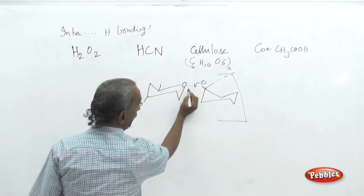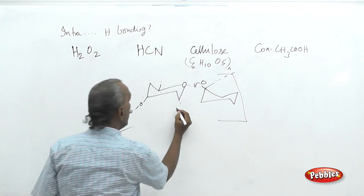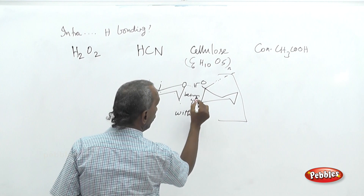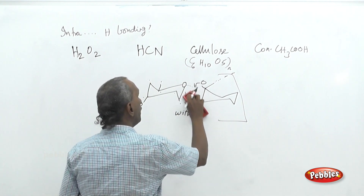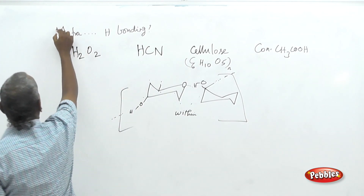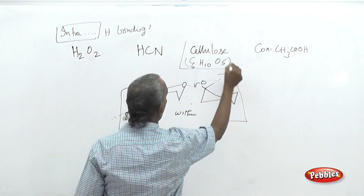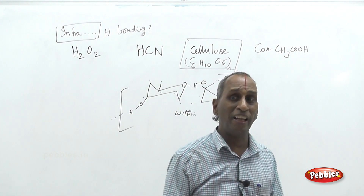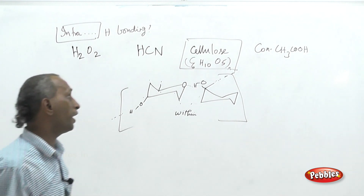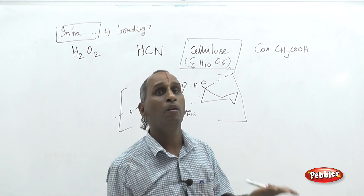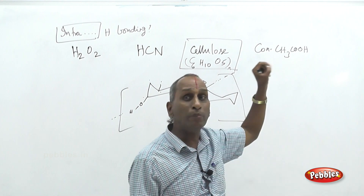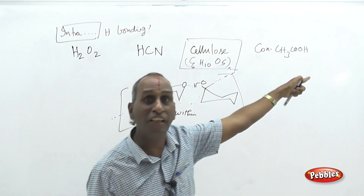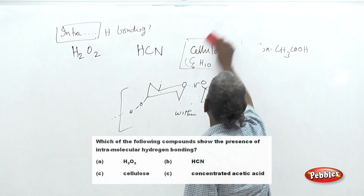Between the glucose units in cellulose, there is hydrogen bonding. Since glucose is only a unit within the molecule and not a separate molecule, this hydrogen bonding exists within the cellulose molecule — it is intramolecular hydrogen bonding. All other species (H₂O₂, HCN, acetic acid) contain intermolecular hydrogen bonding. Concentrated acetic acid is specified to distinguish it from dilute acetic acid, where hydrogen bonding would occur between acetic acid and water molecules.